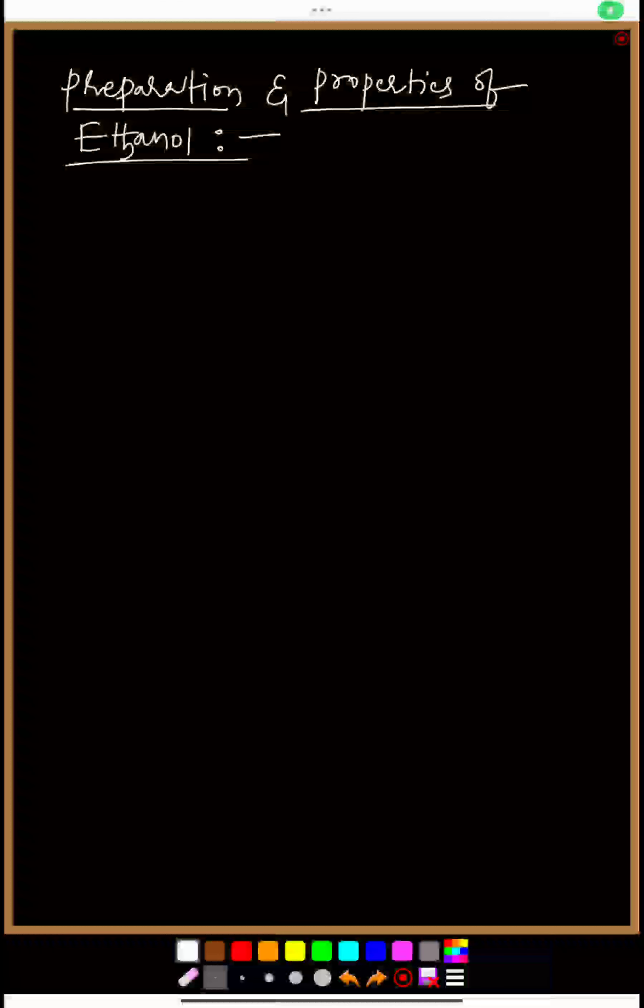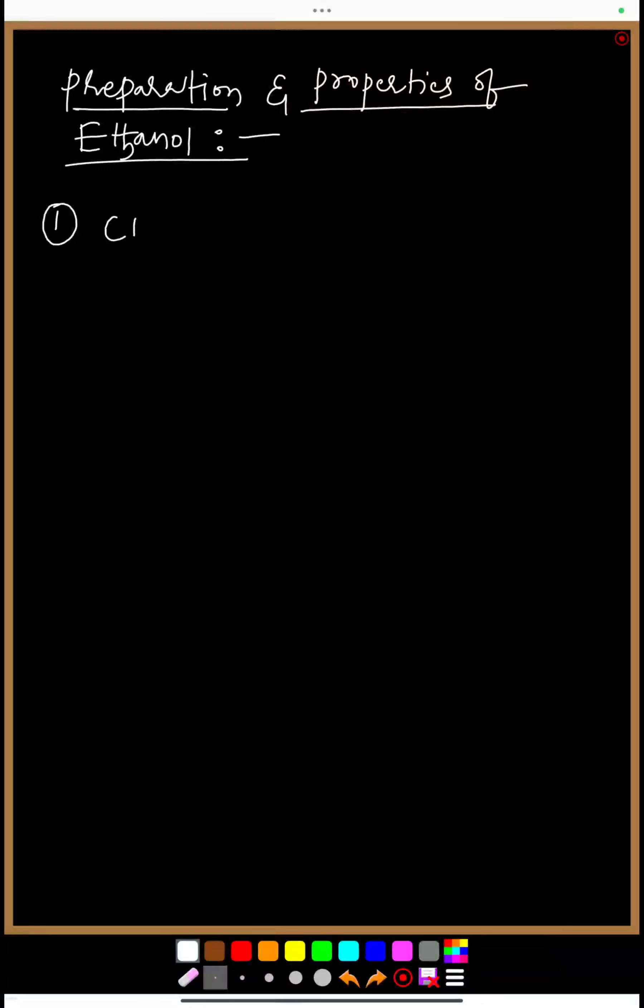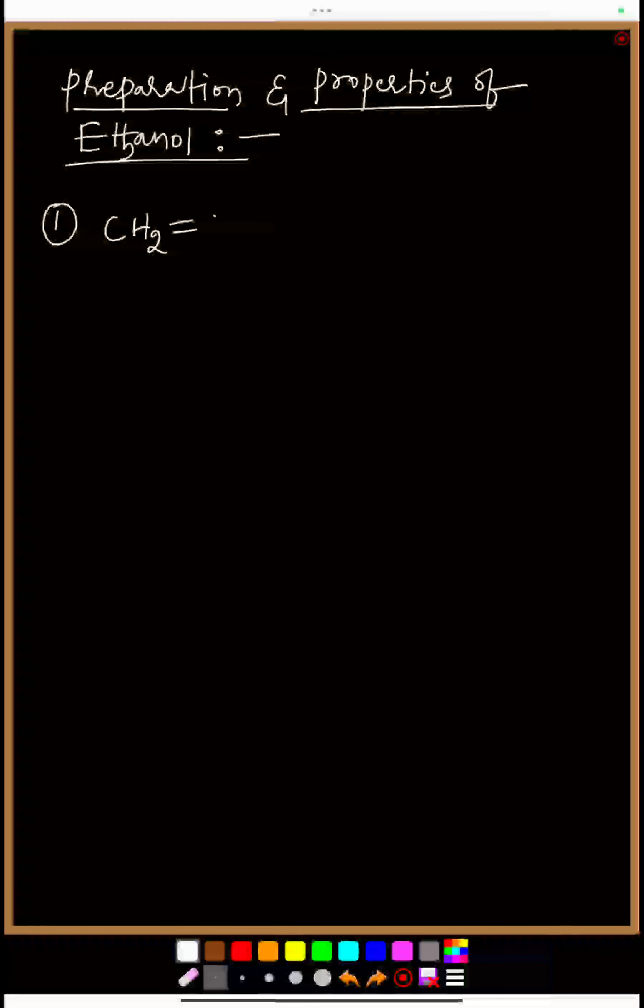Hello my dear students, welcome back to Chemistry Walla classes. In this video we are going to talk about preparation and properties of ethanol, which is called ethyl alcohol. First preparation plan: first we need to take alkene.